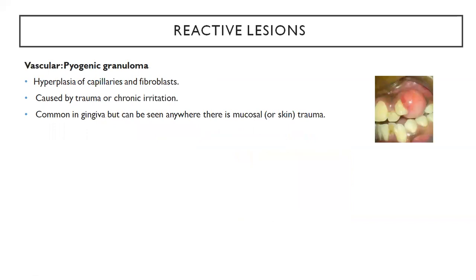Now coming to vascular reactive lesions — pyogenic granuloma. It looks like a ball filled with fluid and it can be mainly caused due to trauma or chronic irritation. This happens mainly because of hyperplasia of capillaries and fibroblasts. It is common in the gingiva but can be seen anywhere in the mucosal or skin following trauma.